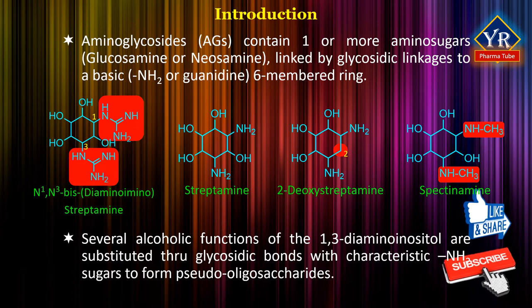In the word pseudo-oligosaccharides, pseudo means false, oligo means few and saccharide means sugar. Altogether, the word pseudo-oligosaccharide means the false sugar molecule consisting of fewer sugars, i.e. 2-9 monosaccharide sugar units.